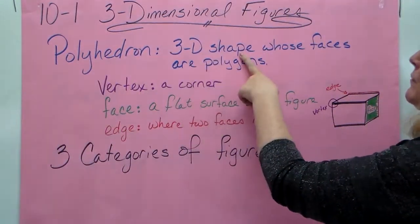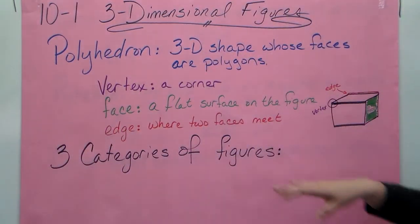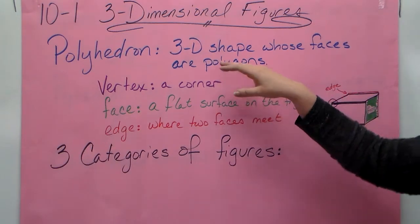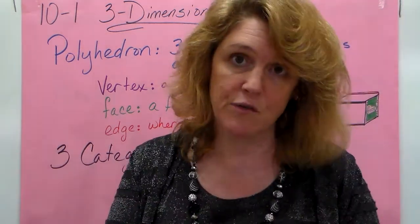So a polyhedron is a three-dimensional shape whose faces are polygons. So you remember the definition of your polygon. It has to be a closed figure, it has to have straight edges, the lines can't intersect, all that stuff.